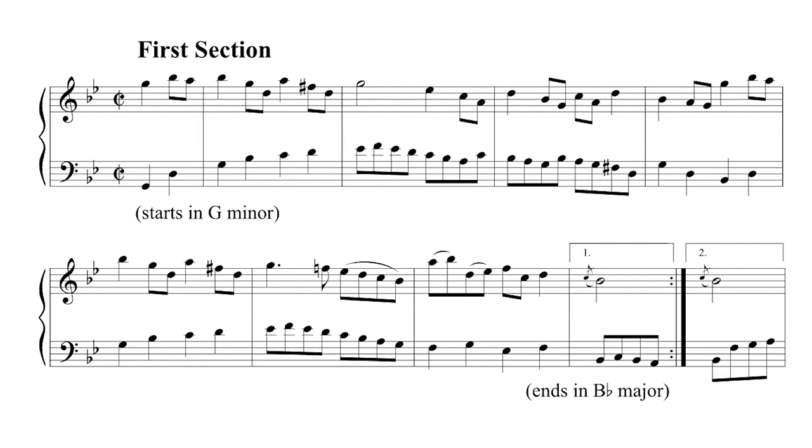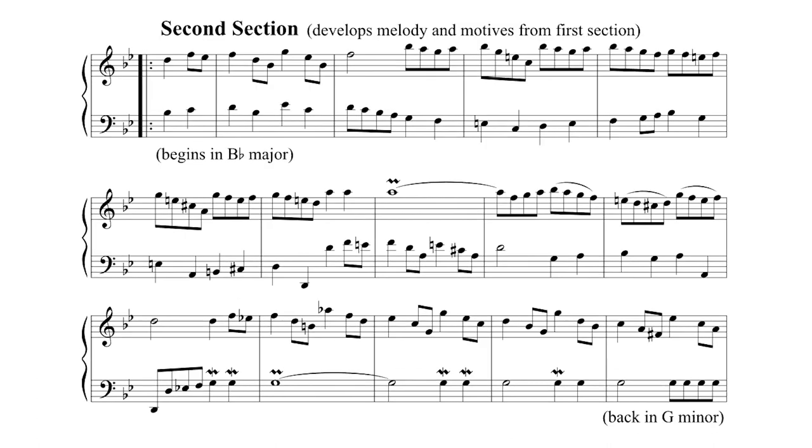The first section is clearly in the key of G minor. We've got a B flat and an E flat in the key signature, but F sharps do appear throughout the melody. It only goes on for eight bars, or two musical phrases, with a repeat in the ninth bar back to the beginning. The second section begins in B flat major. It has some of the similar melodic content, but it very clearly changes and develops.